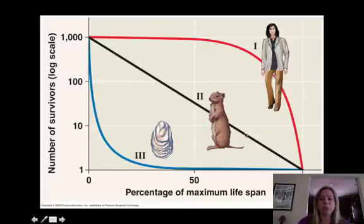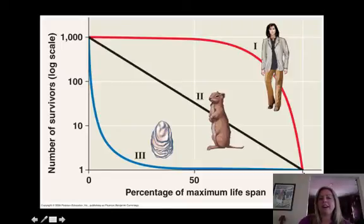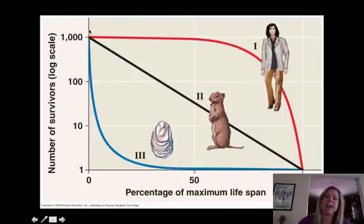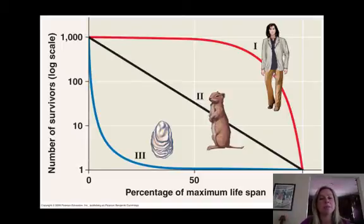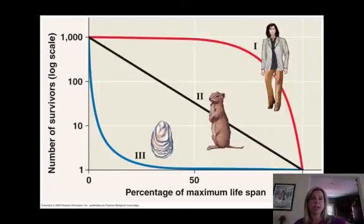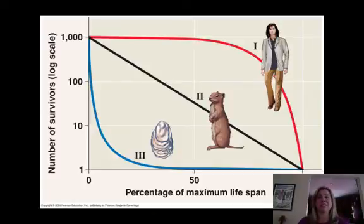Once oysters get old enough to make a shell, their chances of survival skyrocket. That's the Type 3 survivorship curve. Type 2 is like a prairie dog — you have an even chance of dying or living your entire life. And then for humans, Type 1, early on we're pretty okay, but once we get to about half of our lifespan, that's when dying off starts happening. Type 3: high mortality early, better at the end. Type 2: 50/50 chance all the way. Type 1: good chances early, worse as you age.